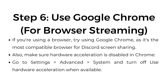Step number six: use Google Chrome for browser streaming. If you're using a browser, try using Google Chrome, as it's the most compatible browser for Discord screen sharing. Also make sure hardware acceleration is disabled in Chrome — go to settings, advanced, system, and turn off use hardware acceleration when available.